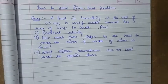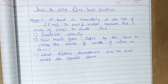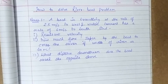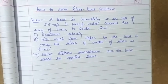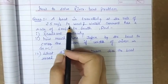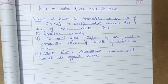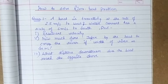Hello students, this video is about how to solve a riverboat problem in kinematics. Here I have an example: a boat is traveling at the rate of 2.5 meters per second to the west, and the water current in the river has a rate of 6 meters per second to the south. We have to find the resultant velocity for that boat.